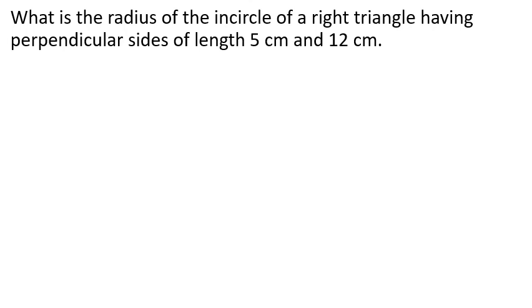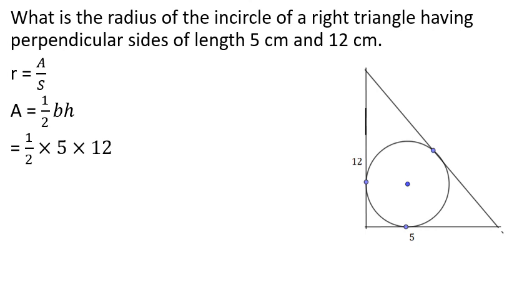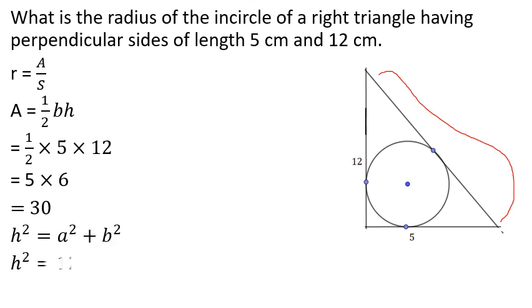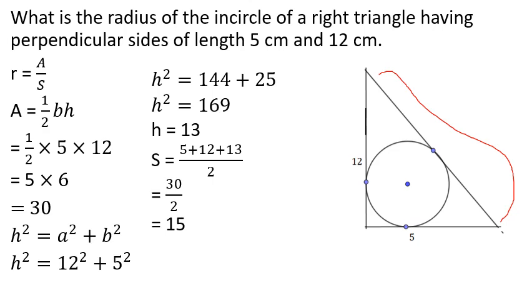The perpendicular sides are 5 cm and 12 cm. We find the hypotenuse using h squared equals p squared plus b squared, giving h squared equals 25 plus 144 equals 169, so h equals 13. The semi-perimeter s equals (5 + 12 + 13) divided by 2 equals 15. The area A equals (5 × 12) divided by 2 equals 30. Therefore, r equals A divided by s equals 30 divided by 15 equals 2 cm.